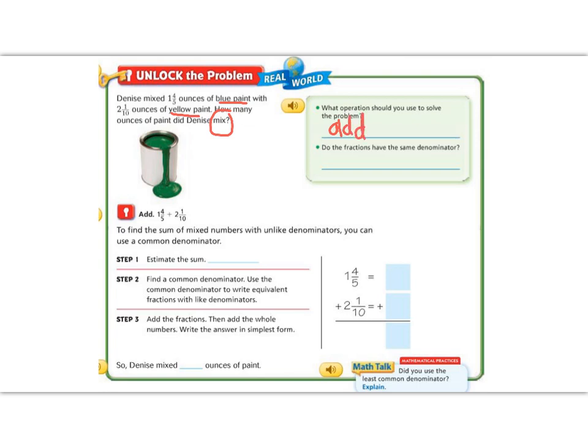Do the fractions have common denominators? One has a 10 at the bottom and one has a 5. So no, they do not. So we're going to have to find common denominators before we can add.